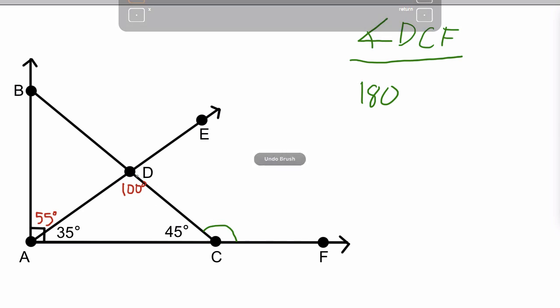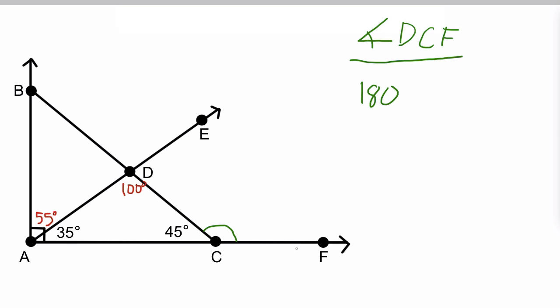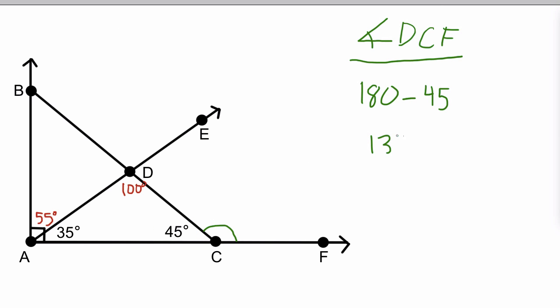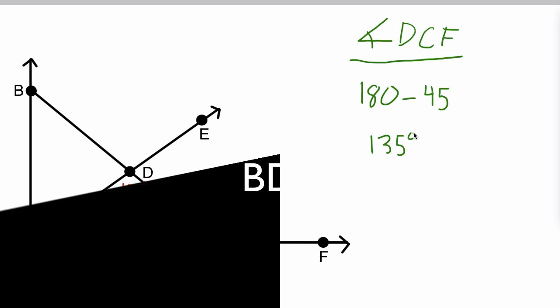We know that the segment D to C is splitting that 180 degrees, and we know that part of it is 45 degrees. So we're going to take 180 and subtract 45, and that will give us 135 degrees, which is the angle DCF we're looking for.